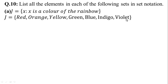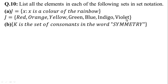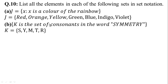In the next part, K is the set of consonants in the word 'symmetry'. So we write the answer: K = {S, Y, M, T, R}. These are the consonant letters. So the answer is K = {S, Y, M, T, R}. In part C, L = {x : x is the teacher teaching my current class}. This answer depends on your class — write the name of your teacher who teaches mathematics or other subjects.